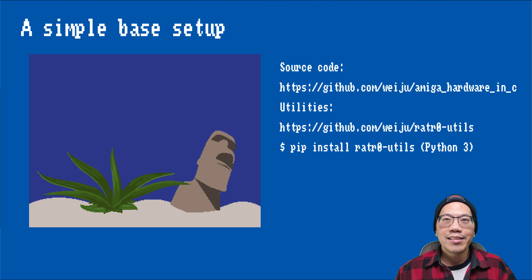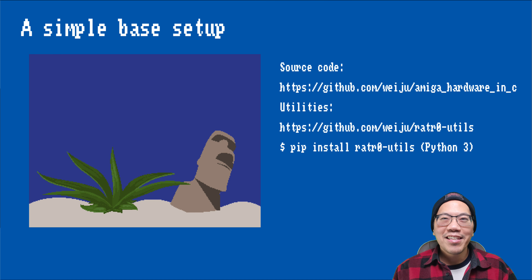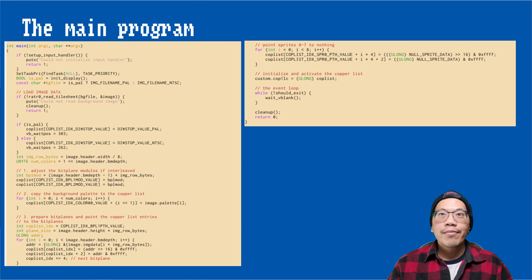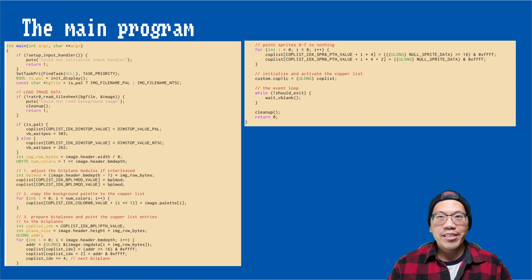As always, I have published this episode's source code and utilities, and you can find the link in the video's description. My idea for the example programs was using a fish tank as the background and drawing a bunch of fish using sprites. I will now briefly introduce the structure of the main program, and every example program will follow this principle structure to keep everything consistent.